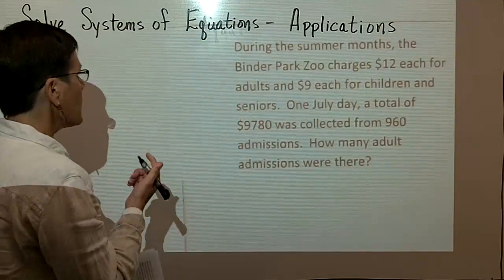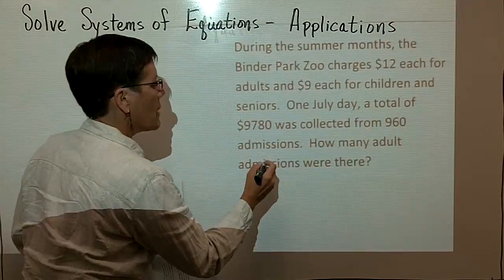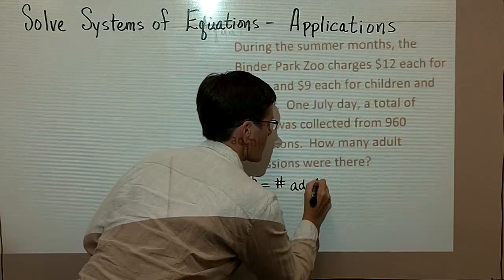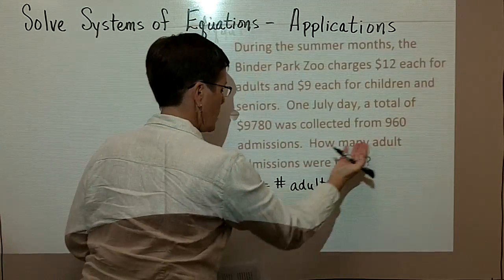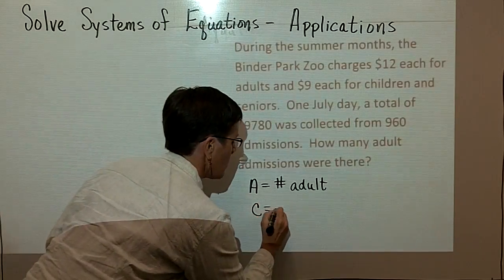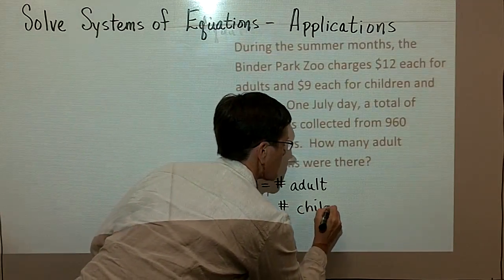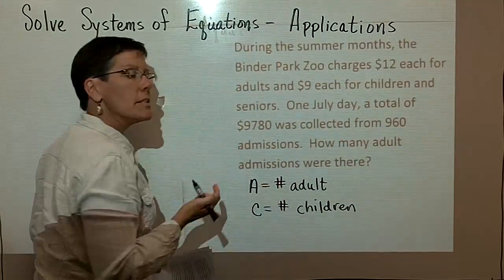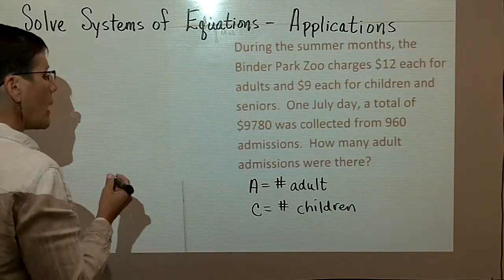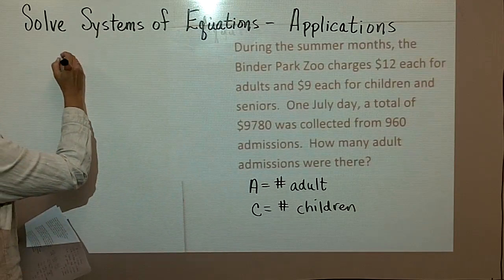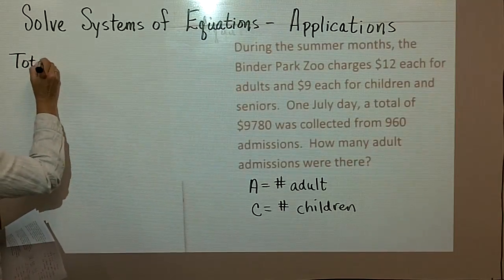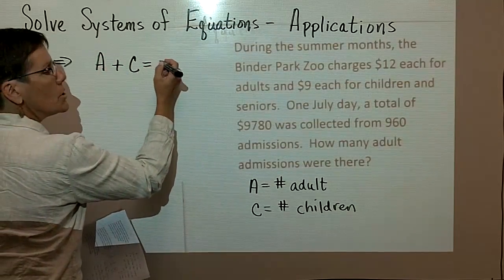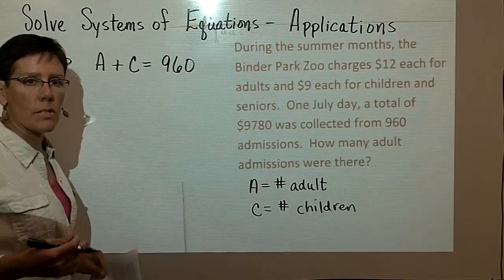In this particular circumstance, I'm going to let A represent the number of adult tickets because I am ultimately looking for how many adult admissions were there. And I'm going to let C represent the number of children admissions. There were 960 admissions in total. So I'm going to write my first equation, my total statement: the number of adults plus the number of children should be 960 persons in total. A + C = 960.